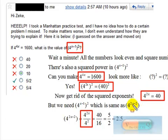And then we just simplified this, knowing that 4 to the 2x equals 40. This became 2.5.